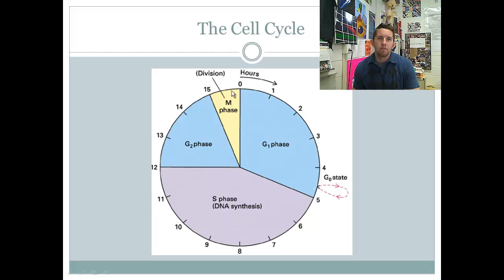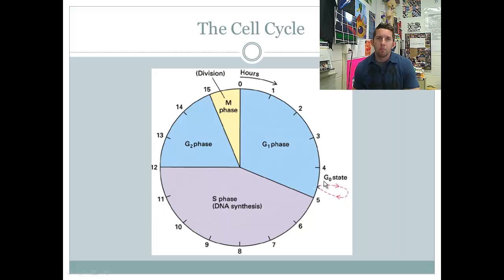The M stands for mitosis. Cytokinesis happens right here, where the cell splits into two daughter cells. Note also that there's a G0 phase that many cells in our body enter — it's a holding pattern. You obviously don't want all your cells dividing at all times; that would be problematic. So this is the overview.